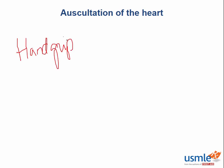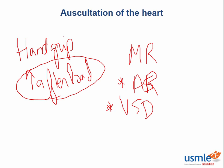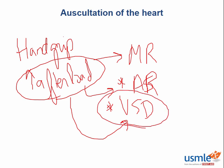Finally, the hand grip maneuver results in an increase in afterload without augmenting venous return or preload. By making a fist and squeezing, the patient compresses the arterioles and arteries of the hands, increasing the pressure the heart pumps against. This results in increased intensity of mitral regurgitation, aortic regurgitation, and ventricular septal defect. When afterload increases, the left ventricle ejects against higher pressure, causing blood to either regurgitate across the mitral valve, regurgitate back over the aortic valve, or be preferentially shunted to the lower-pressure right ventricle through the ventricular septal defect — increasing the intensity of all three murmurs.